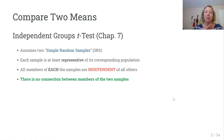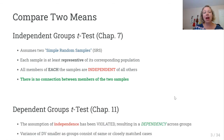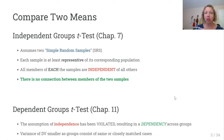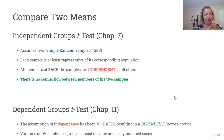Now we're still going to do a t-test and still have two samples, but now we're focusing on dependent groups — groups of measurements where the populations are matched, paired, or dependent. All three of those words could apply.